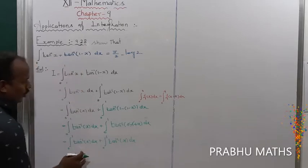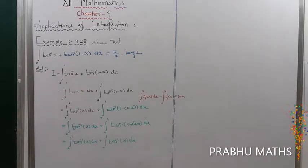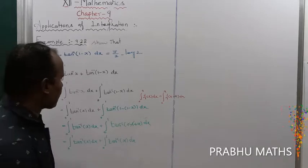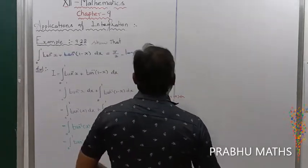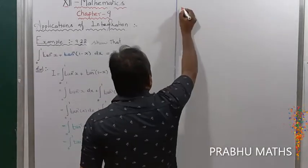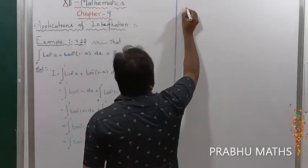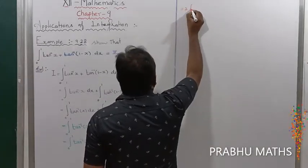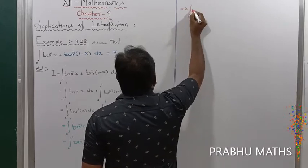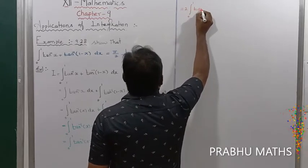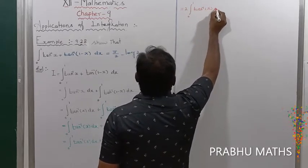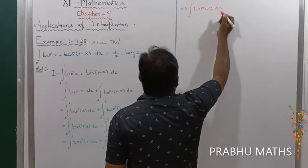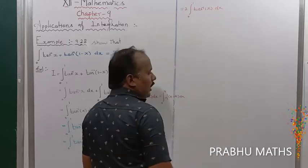So both terms are the same value: tan inverse of x dx and tan inverse of x dx. This means it is two times the integral value — that is equal to 2 into integral of 0 to 1 of tan inverse of x into dx.